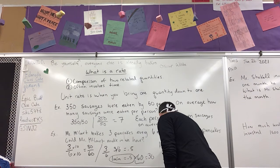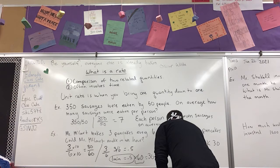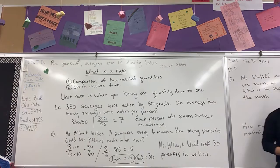So Mr. McCourt would cook thirty pancakes in one hour. We're going to do one more example here. We've already been recording for seven minutes and thirty-five seconds, but we're going to do one more.